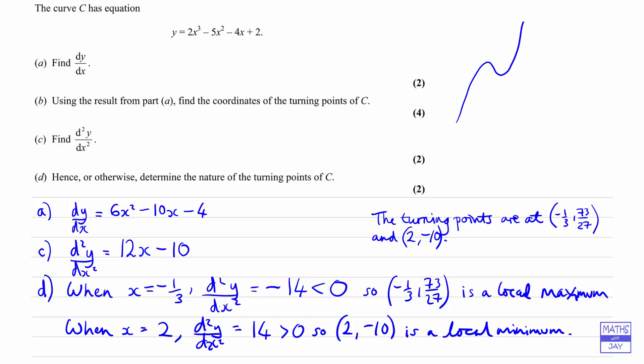That matches with the curve that we sketched to start off with. Now it does say in the question, or otherwise. So that does mean if you wanted to, you don't have to use the second derivative. You could use your answer to part a, and look at points either side of the two turning points, to see what happens to the gradient, and explain using that, that these points are a local maximum and a local minimum. That's up to you.